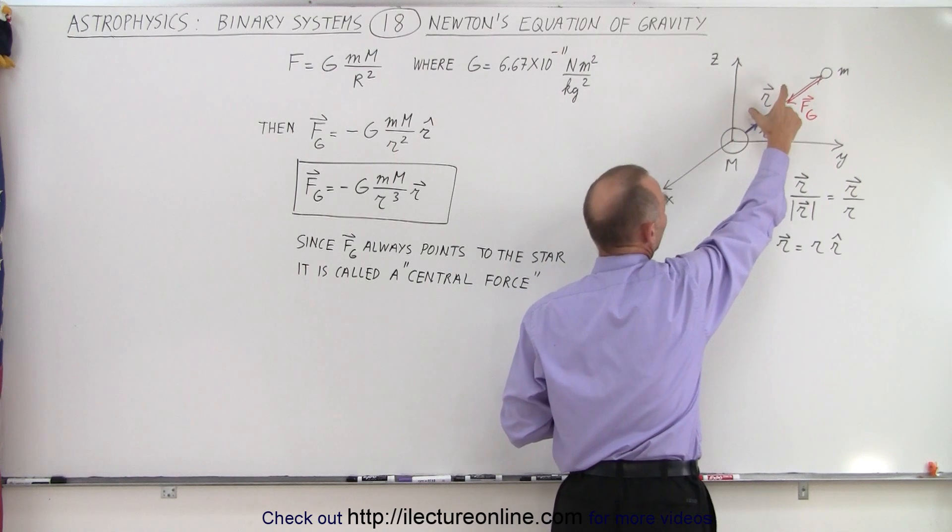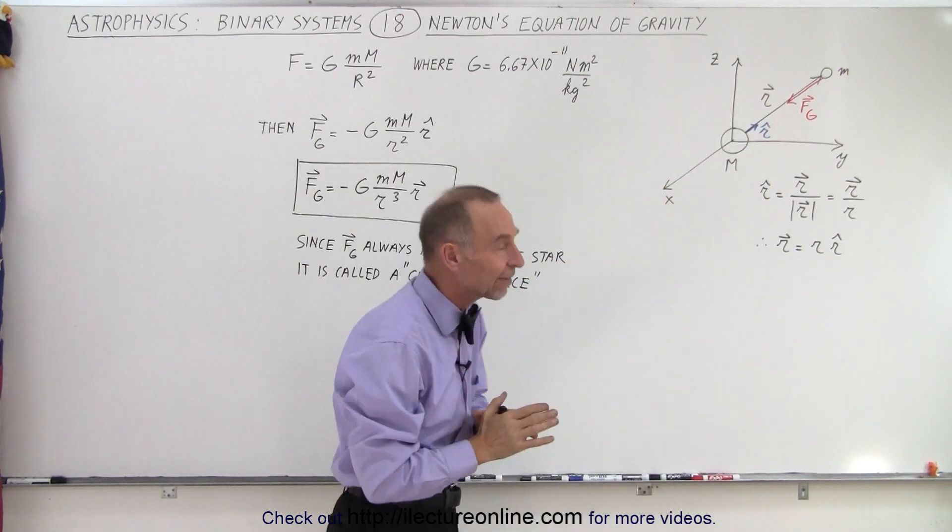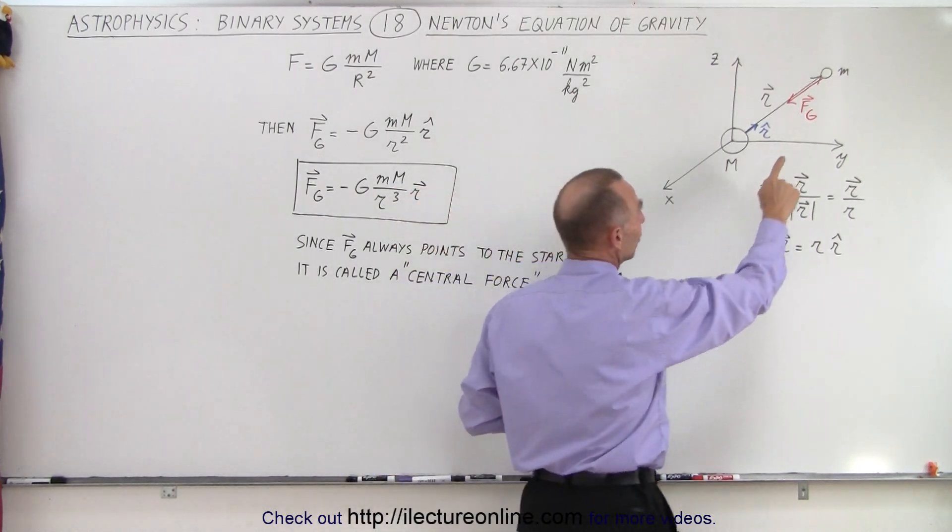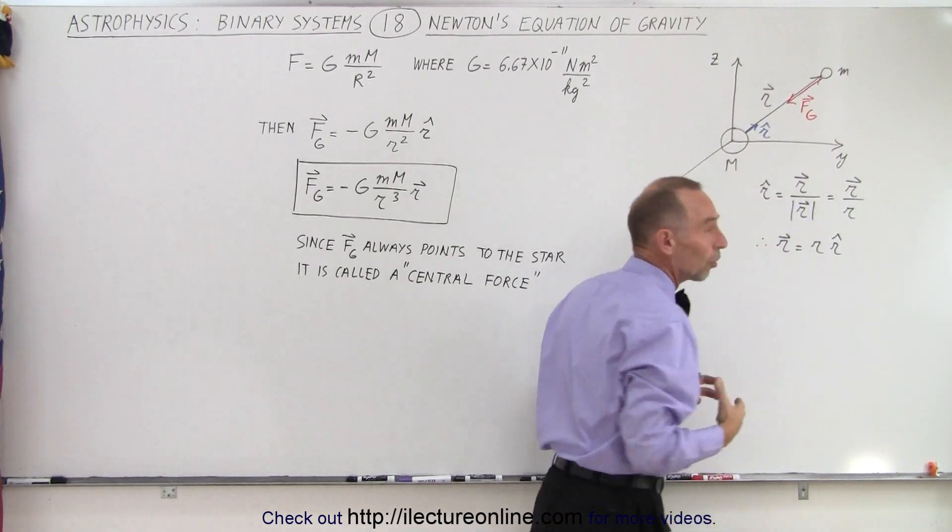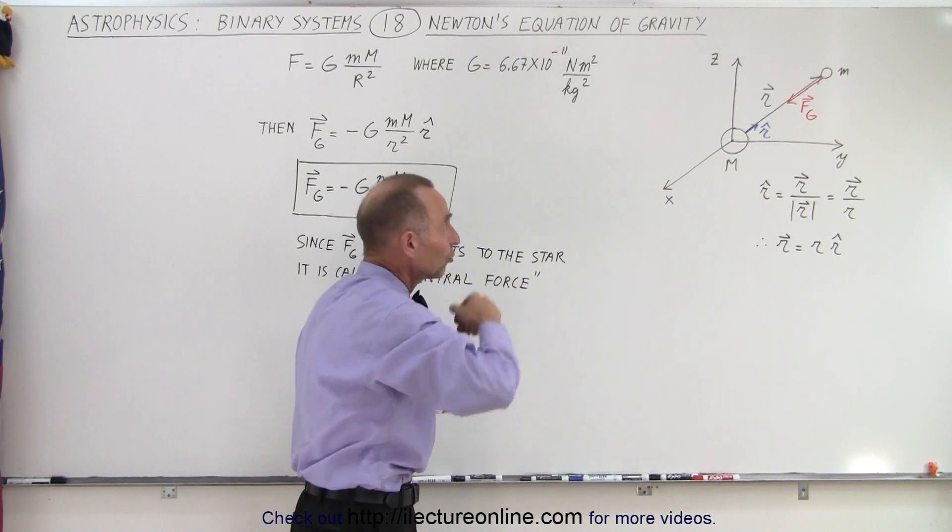Notice that if we divide the position vector by its own magnitude, we get the unit vector pointing in that same direction. But now notice that if we express the gravitational force in terms of a vector, that force is now pointing towards the star. Relative to the planet, the force on the planet is towards the star.